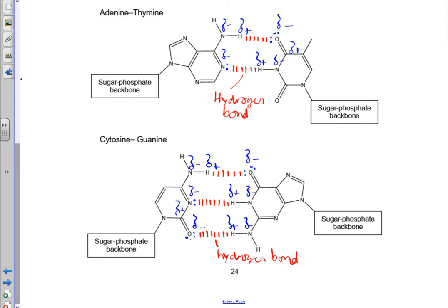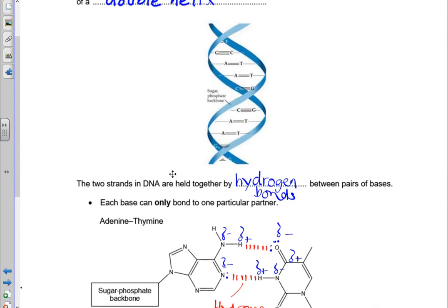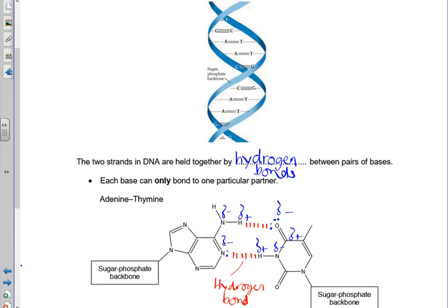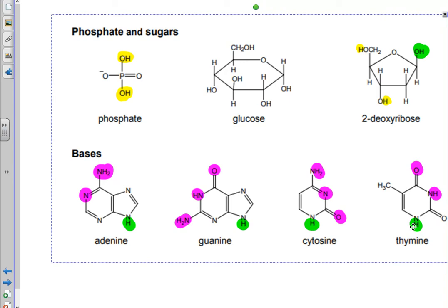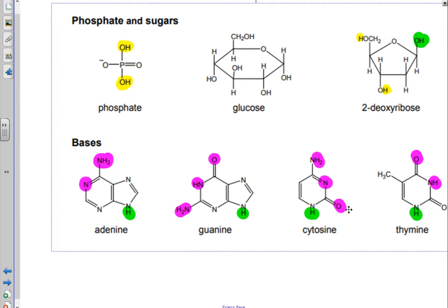If you look at the base pairs, you can see that the groups involved in hydrogen bonding are diagonally opposite the nitrogen that is bonded to the sugar. This makes sense if you think about the structure of the double helix — the sugar is part of the phosphate-sugar backbone, and the bases have to stick out inside the double helix and base pair with the base on the other strand. Going back to our diagram of the bases, the atoms involved in hydrogen bonding are shown in purple, and you can see they're opposite in the molecules from the atoms involved in the condensation reaction to join to the sugar, which is shown in green.